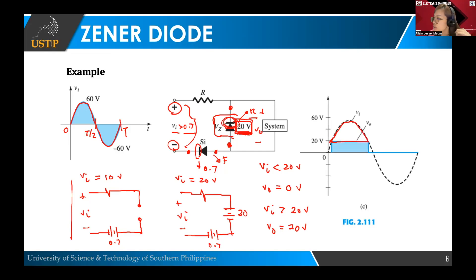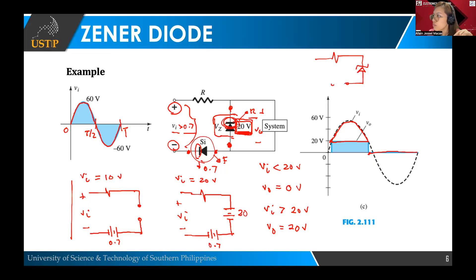For the negative cycle, the output will always be zero because even at some point your Zener diode will be forward biased in this condition, but your silicon diode will always be an open circuit. So there will be no current flowing through the whole circuit. That is the end of the lesson.